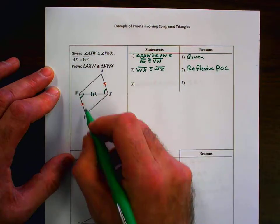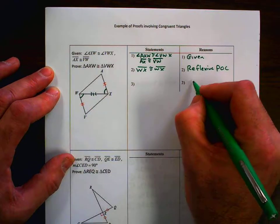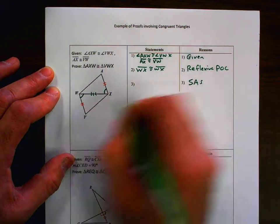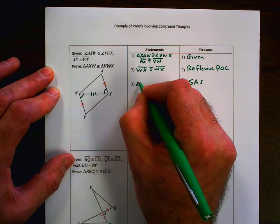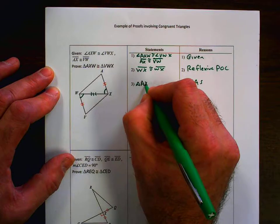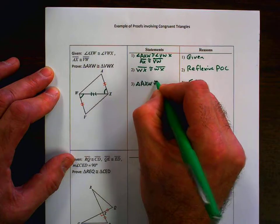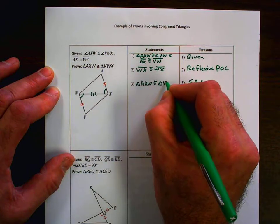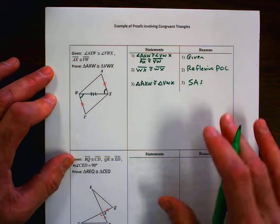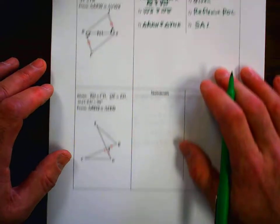And then from there, we have side, angle, side. That's going to be our reason why the two triangles are congruent. Triangle AXW, congruent to triangle VWX, and we're good to go. So that's the first one that I was going to show you.